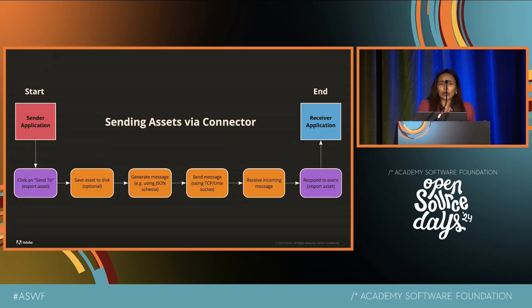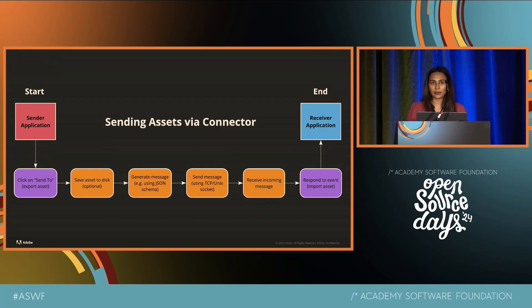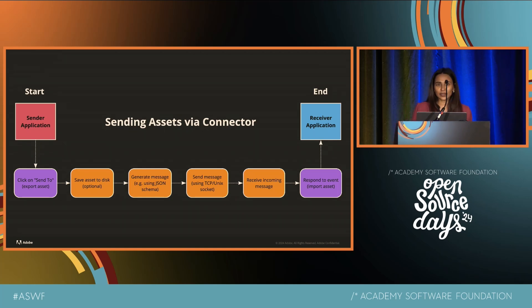Let's see what the end-to-end process looks like when sending assets through Connector. When a user clicks the Send To button to export an asset, we first save that asset to disk, generate a message, and send that message. On the receiver side, we receive that incoming message and an event is triggered to import that asset.